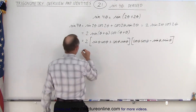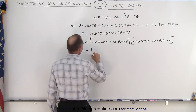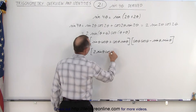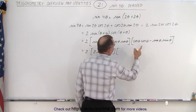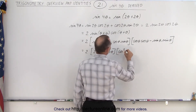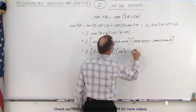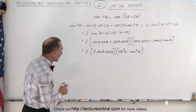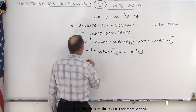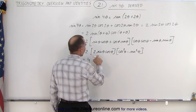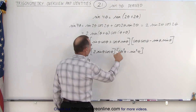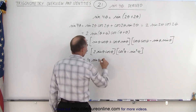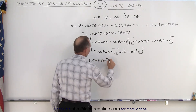Simplifying that just a little bit, we can write this as 2 times 2 times the sine of theta cosine of theta, multiplied by the cosine squared of theta minus the sine squared of theta. Now we multiply those out. This gives us 4 times the sine of theta times the cosine squared of theta, so this becomes the sine of theta times the cosine squared of theta.